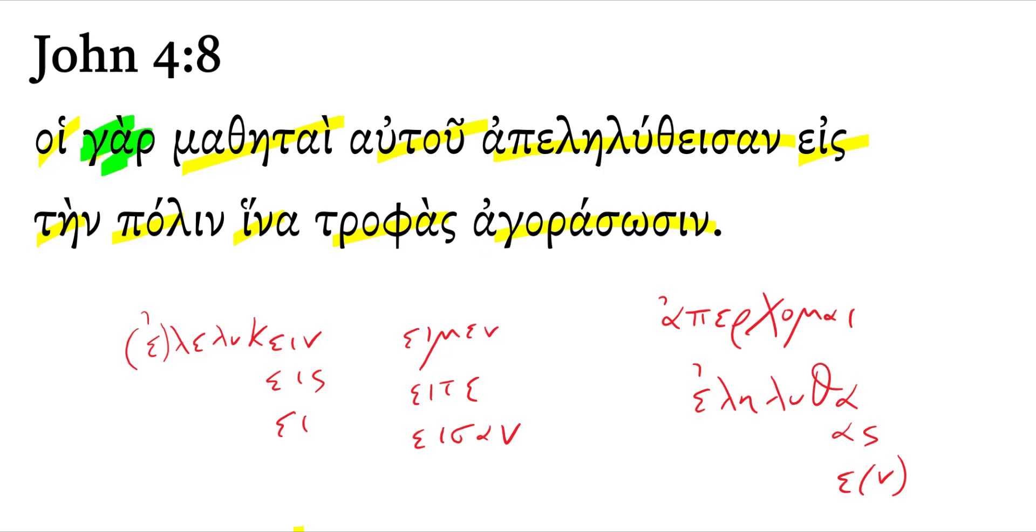Notice how this postpositive word gar will jump second, in this case even dividing the article and the noun it goes with. But in English we put those little connecting words first.